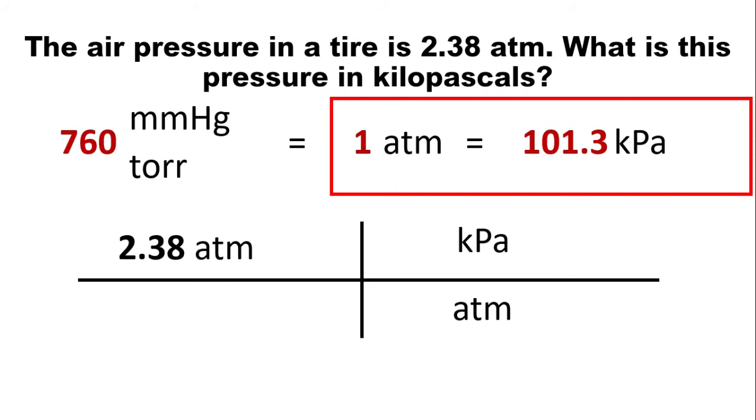Okay, so using this part of the equation, just copy the coefficients, 101.3 over 1. So simply just multiply them. 2.38 times 101.3 will give us 241.094 kilopascal. Since there are three significant figures in the given, the final answer should be 241 kPa.